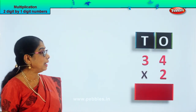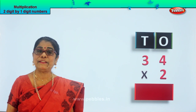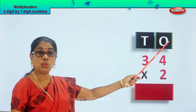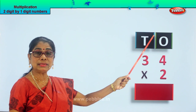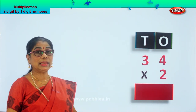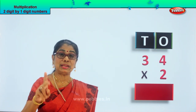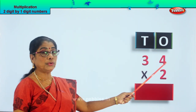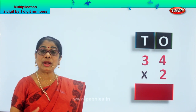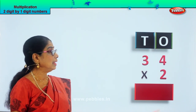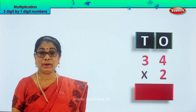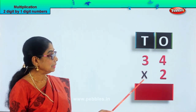Now how are we going to multiply? That's the question. First, you have to arrange the numbers in order: ones, tens. This is the ones place, tens place. The two-digit number given to you is 34 — three tens, four ones. And what are you going to multiply with? A single digit, two. You write the multiplication sign here.